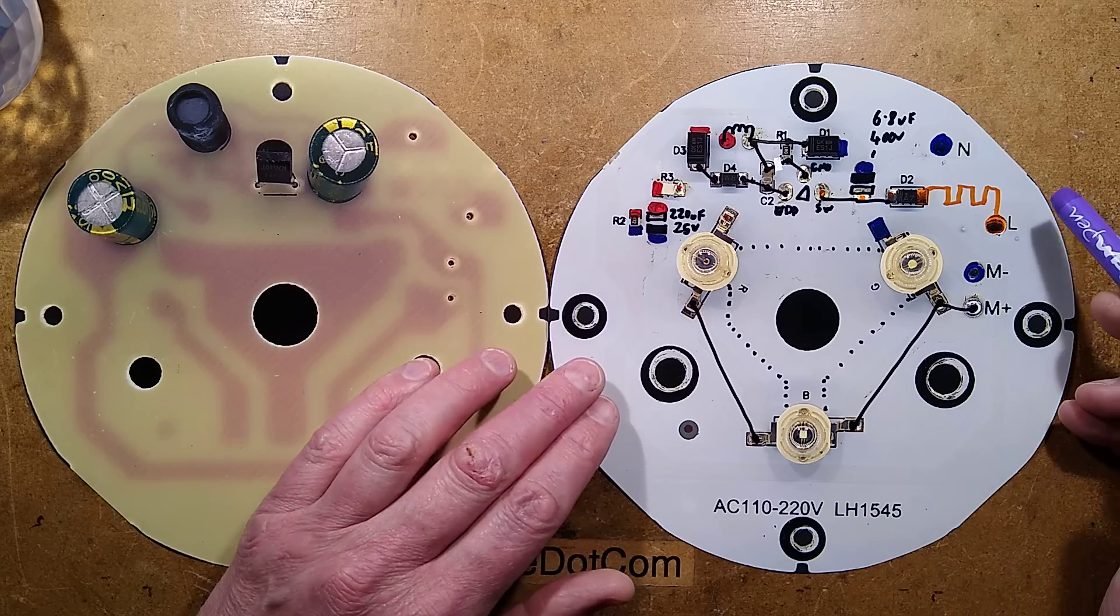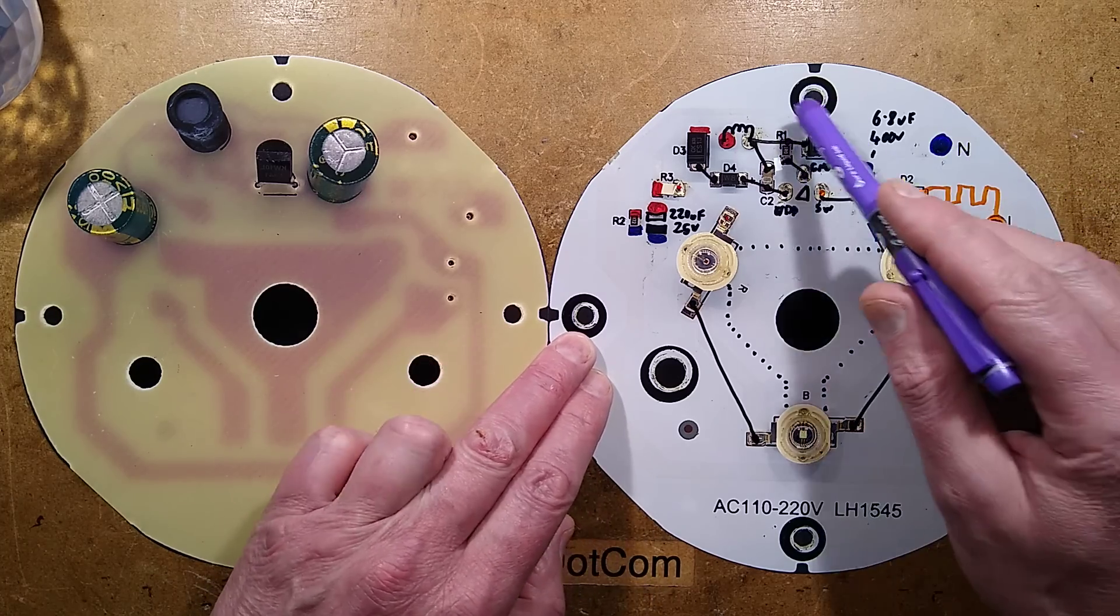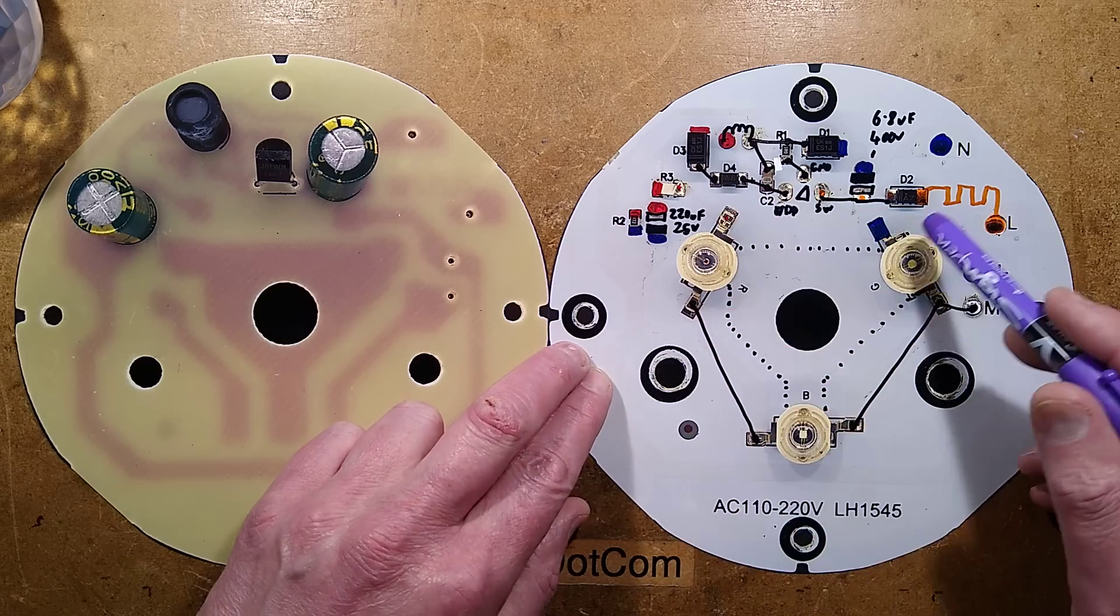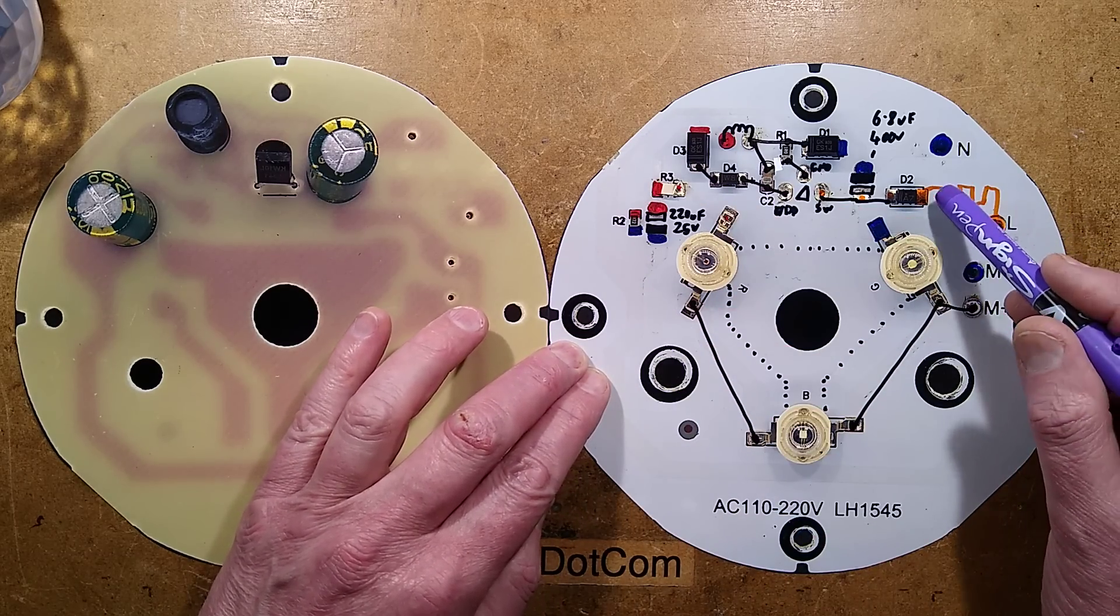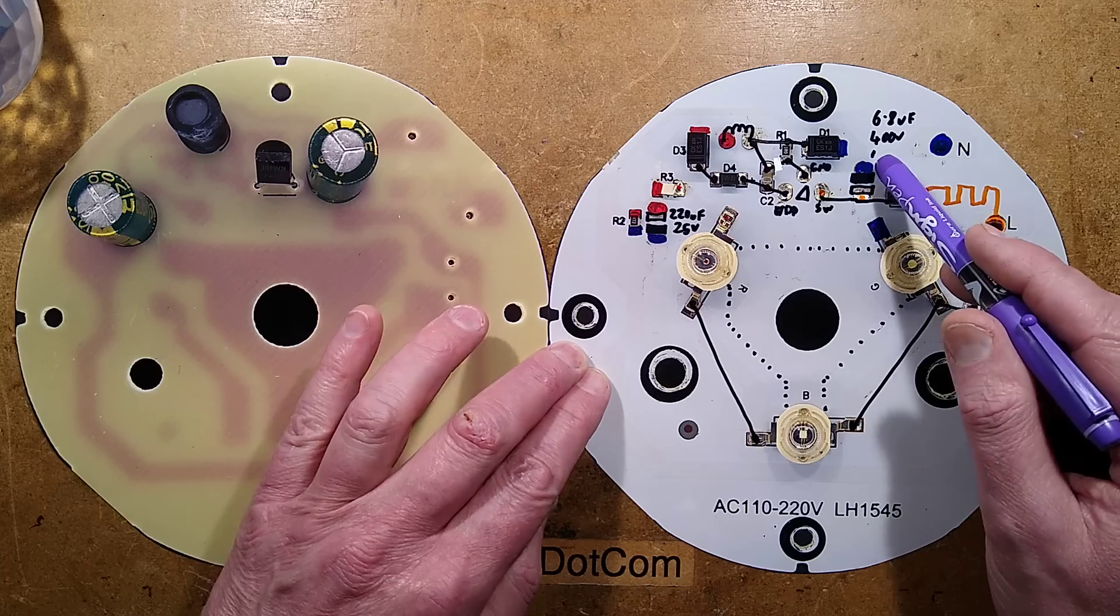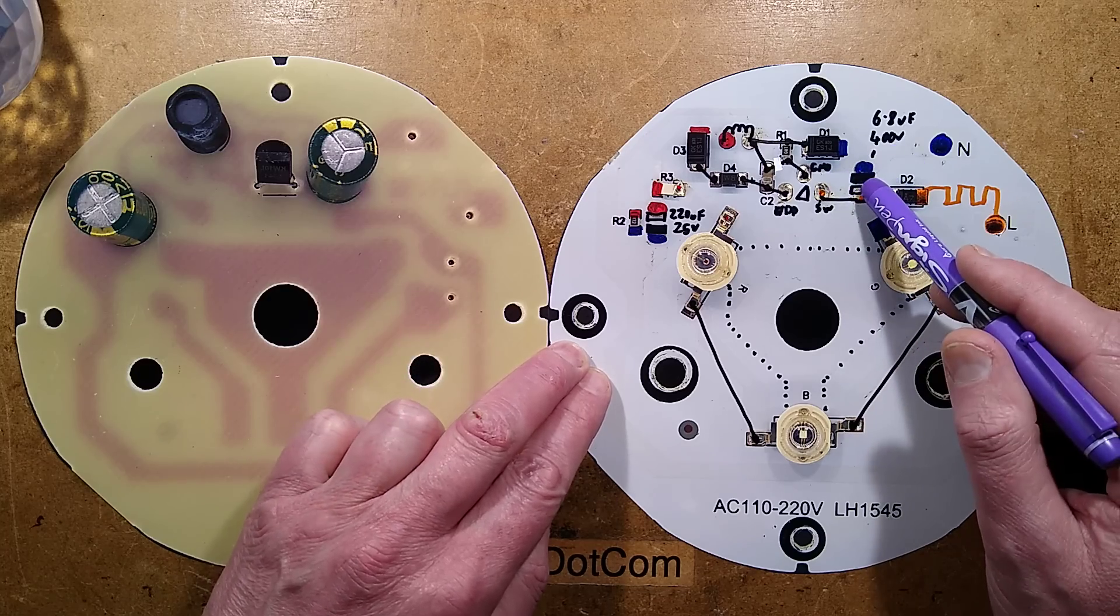To start with we have live and neutral coming in. The neutral is the whole negative reference for the whole circuit, it's almost like the zero volts. The live comes in via this improvised fuse, a one amp diode. It's got a death beam capacitor, 6.8 microfarads.